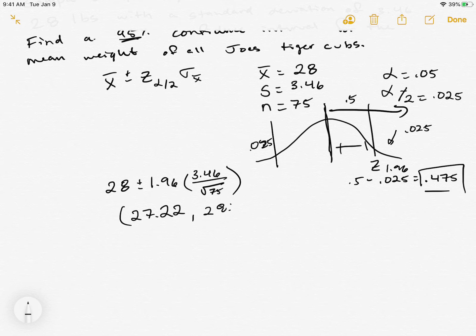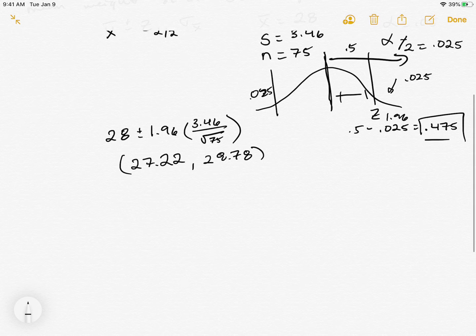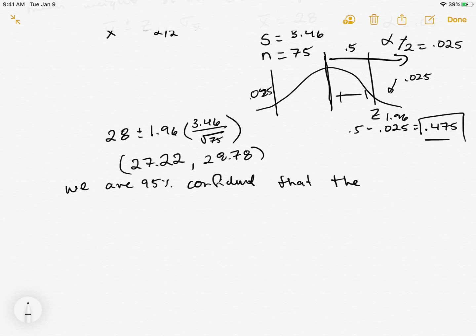How do we interpret one of these confidence intervals? What this confidence interval is telling us is that we are 95% confident that the actual mean for all of Joe's cubs is between 27.22 and 28.78 pounds.